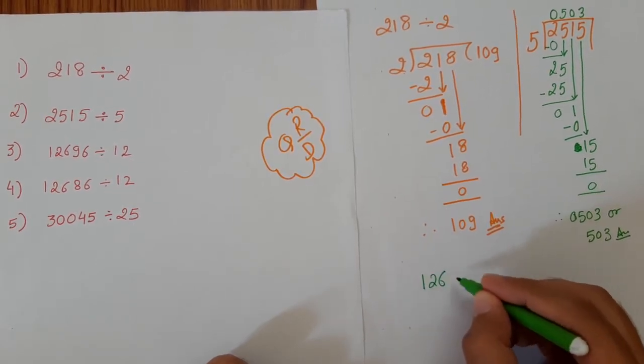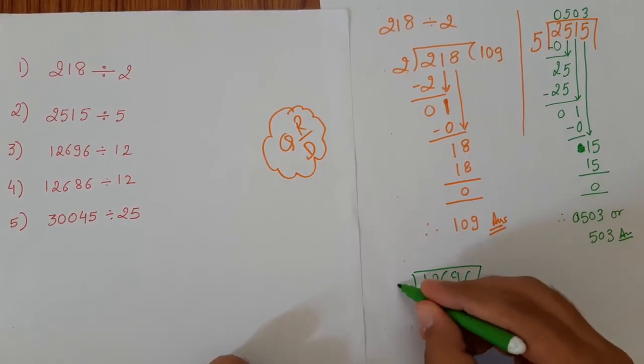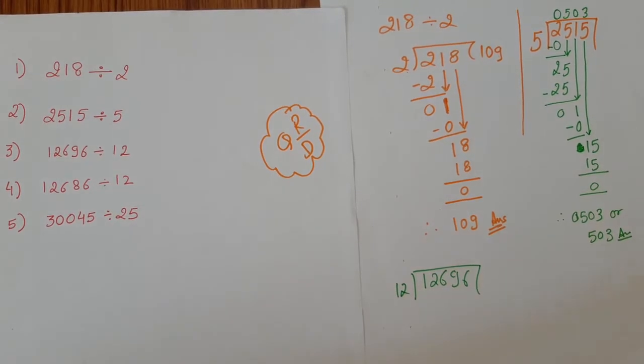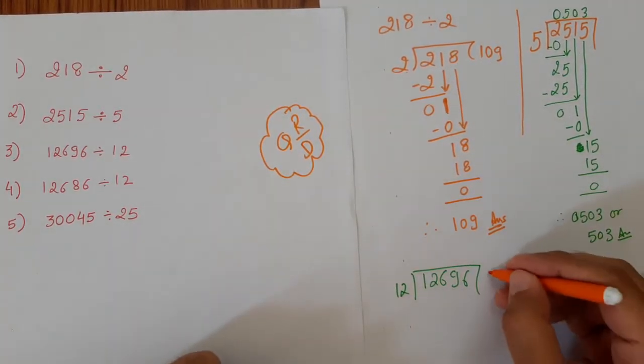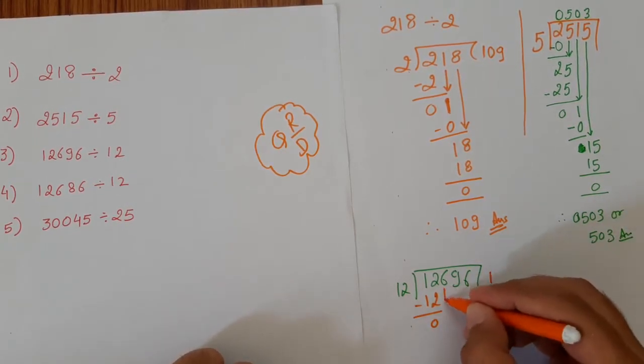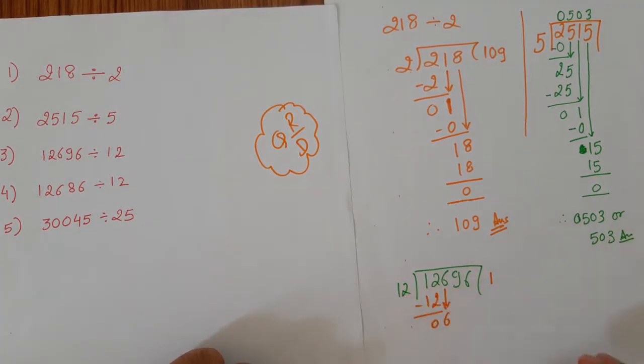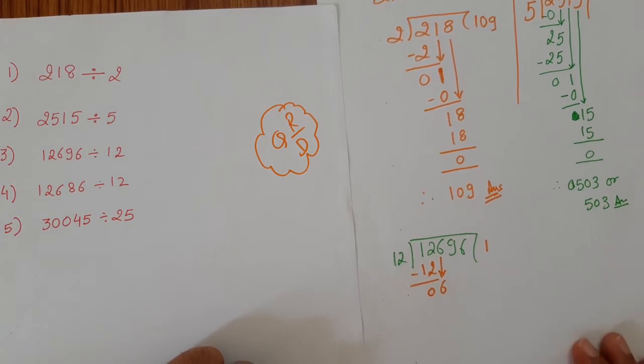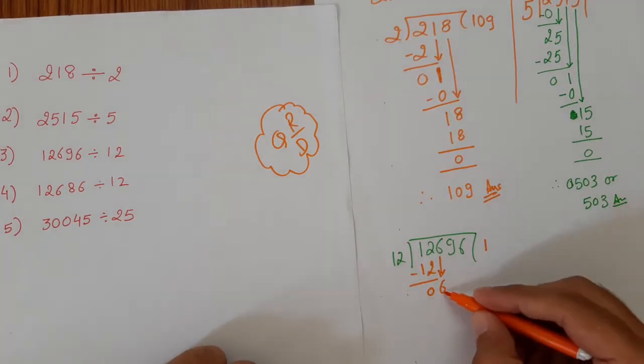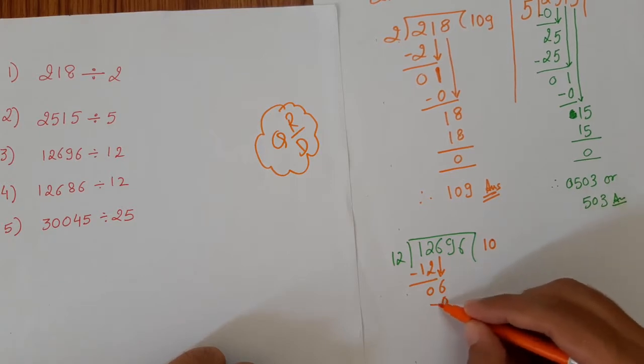12696 divided by 12. So in this case, 12 times 1 is 12. So 0, take down 6. So 1 at a time. Even if it is 2 digit, we are dividing it by 2 digit number, 1 at a time. So is it divisible or is it more than 12? No, it is less than 12. So 12 times 0 is 0.